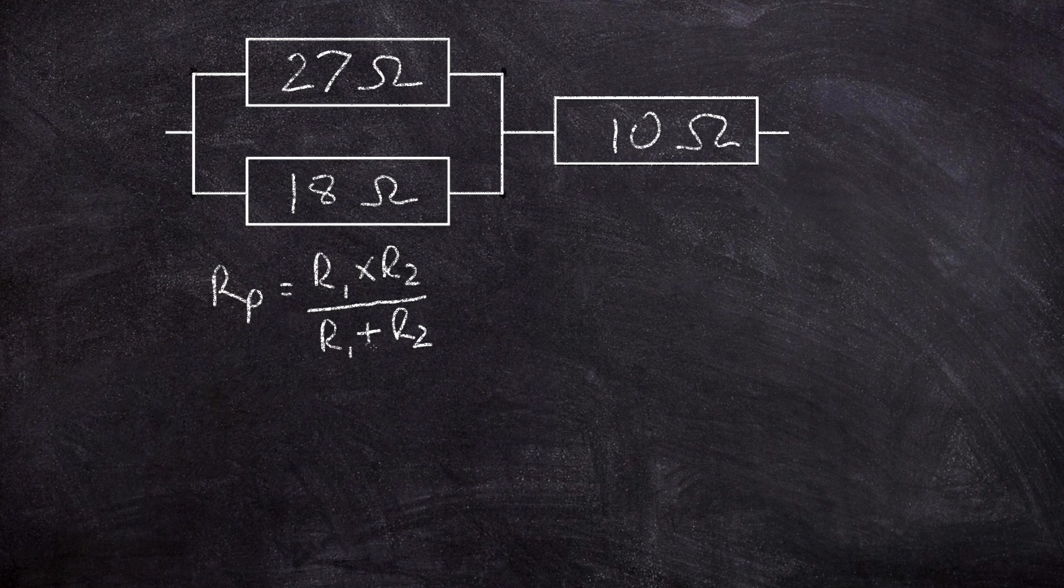So bear in mind this is the product over sum rule, product meaning the multiplication of two numbers and sum meaning the addition of those two numbers.